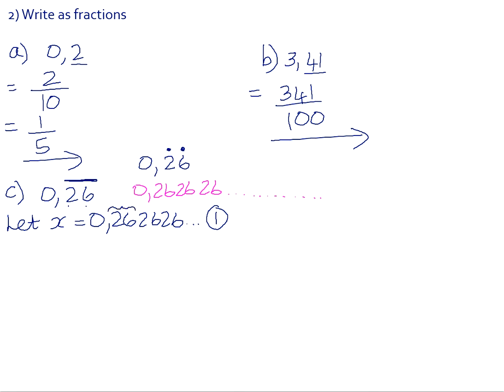So for 0.26 recurring, we let x equal 0.262626 continuing, and call that equation 1. We are creating equations here because what we'd like to do is eliminate or get rid of these recurring decimal places. There are 2 recurring decimal digits, so we multiply both sides of the equation by 100 — the power of 10 with 2 zeros — because we've got 2 recurring decimal places.